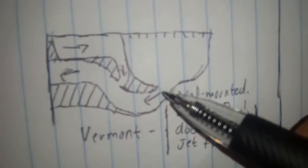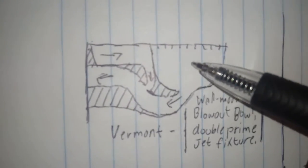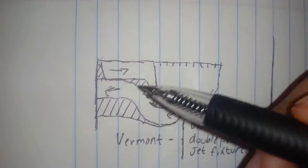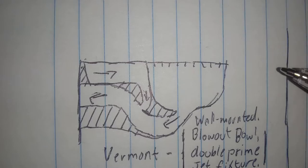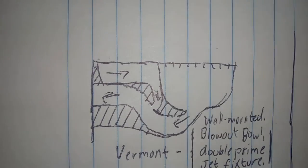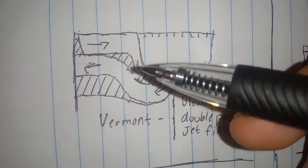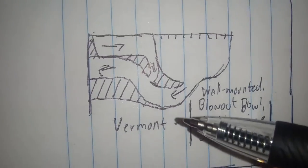The Vermont is a blow-up bowl, and as you see here, it goes in and then up the trapway, and then it just goes from there. Right there, two siphon jets, and notice that this is higher than the trapway itself, so it can't siphon.